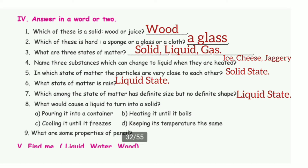5. In which state of matter are the particles very close to each other? The answer is solid state. 6. What state of matter is rain? The answer is liquid state. 7. Which among the states of matter has definite size but no definite shape? The answer is liquid state.